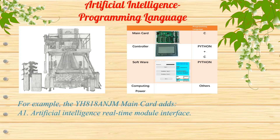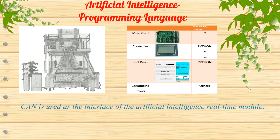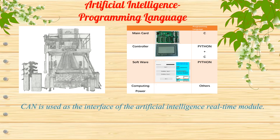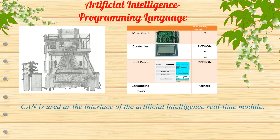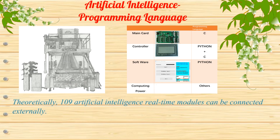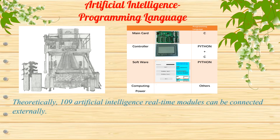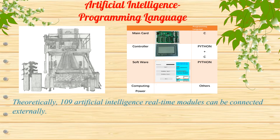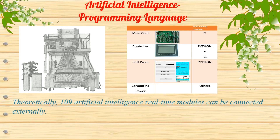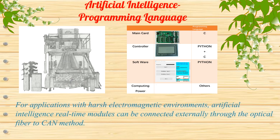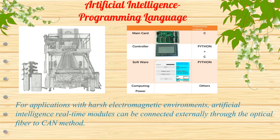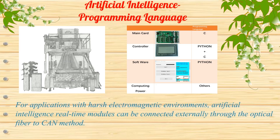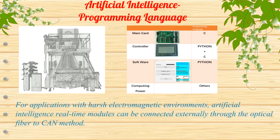For example, the YH-818-ANJM main card adds: 1. An artificial intelligence real-time module interface. CAN is used as the interface for the AI real-time module. Theoretically, up to 109 AI real-time modules can be connected externally. For applications with harsh electromagnetic environments, AI real-time modules can be connected through the optical fiber token method.